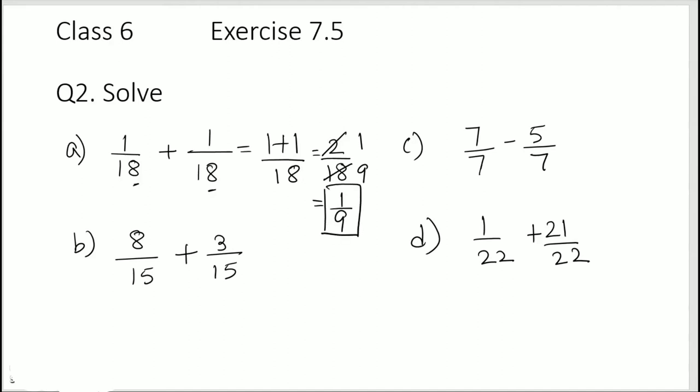Second one, 8 over 15 plus 3 over 15. Again, same denominators. So simply add the numerators. So that would be 8 plus 3, that's 11 over 15. And that's the answer.